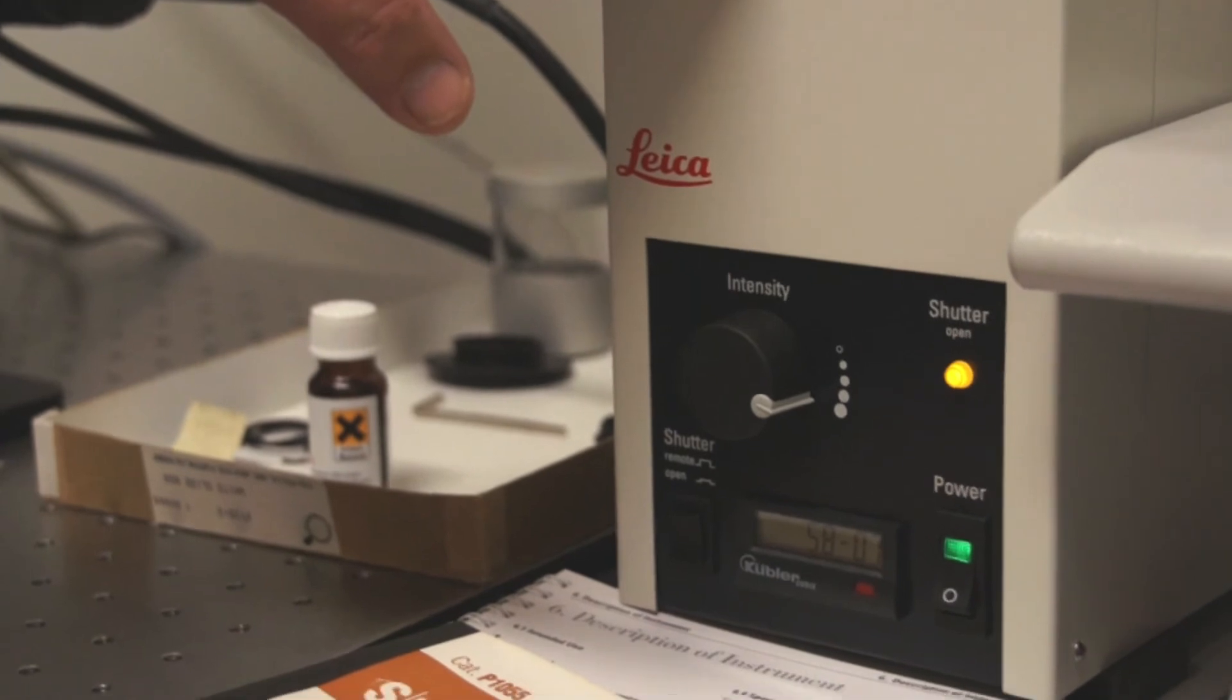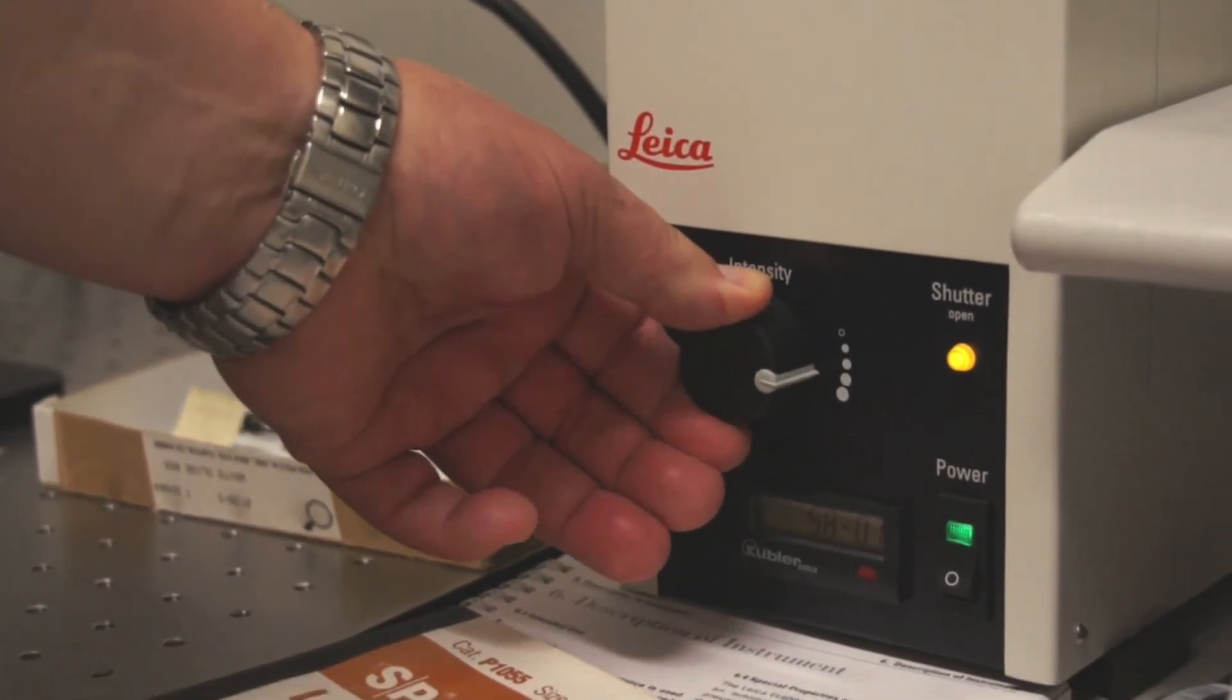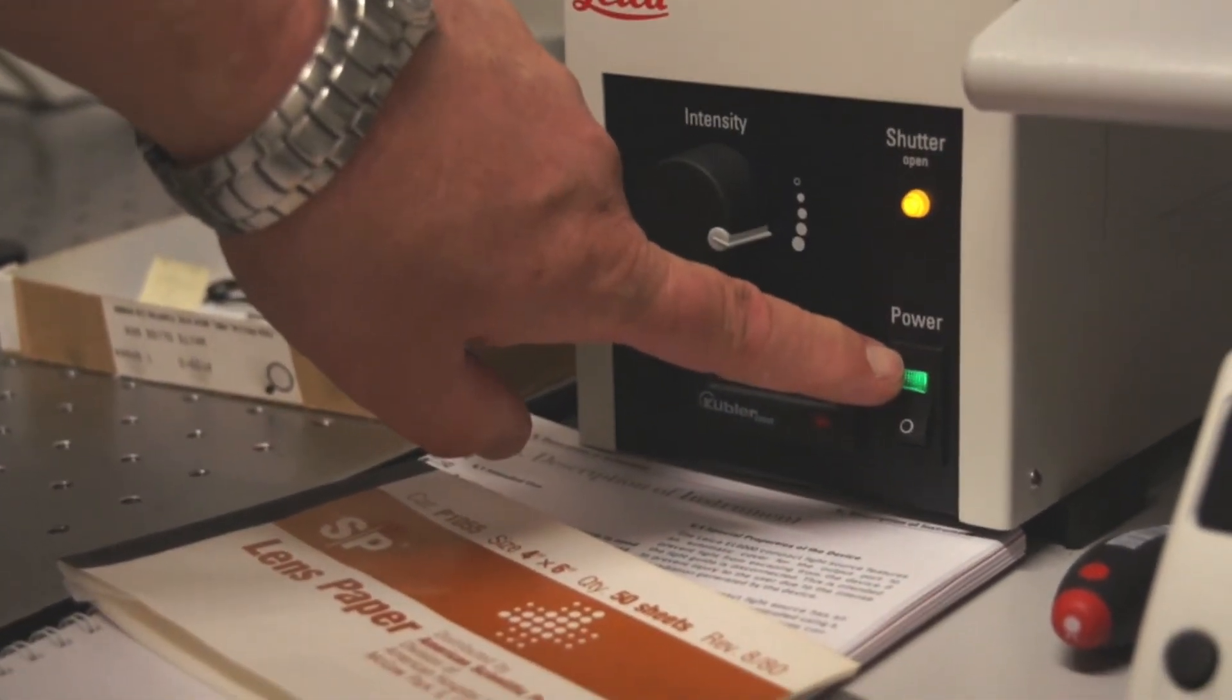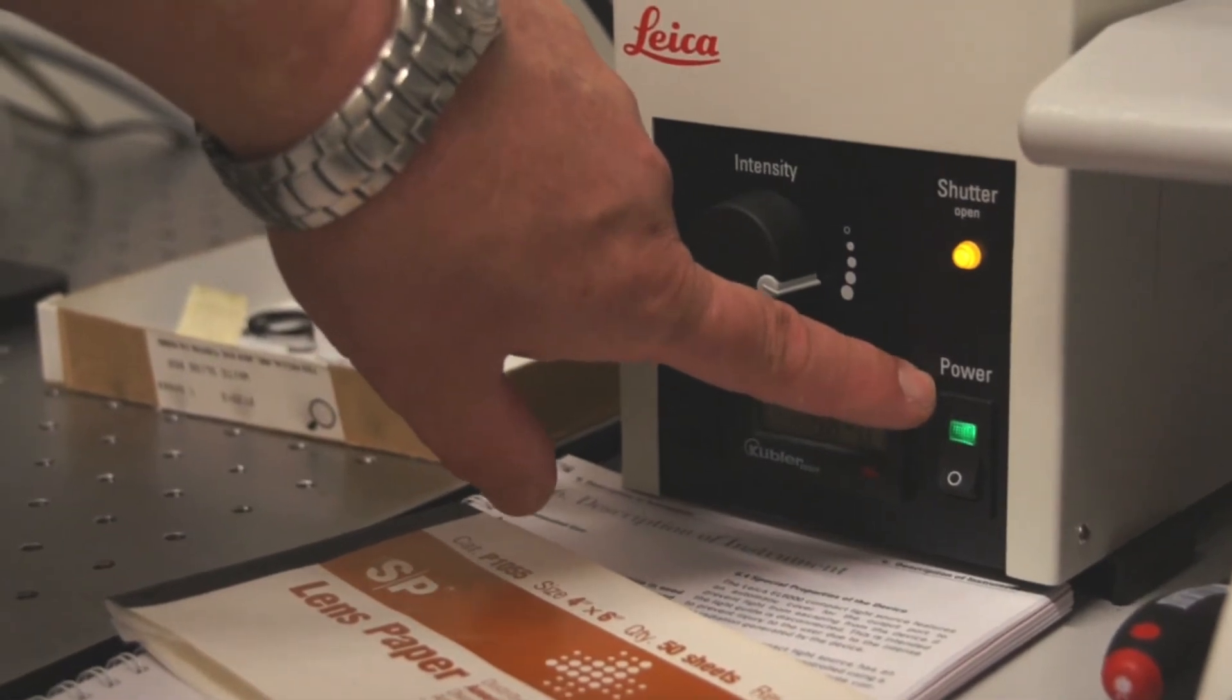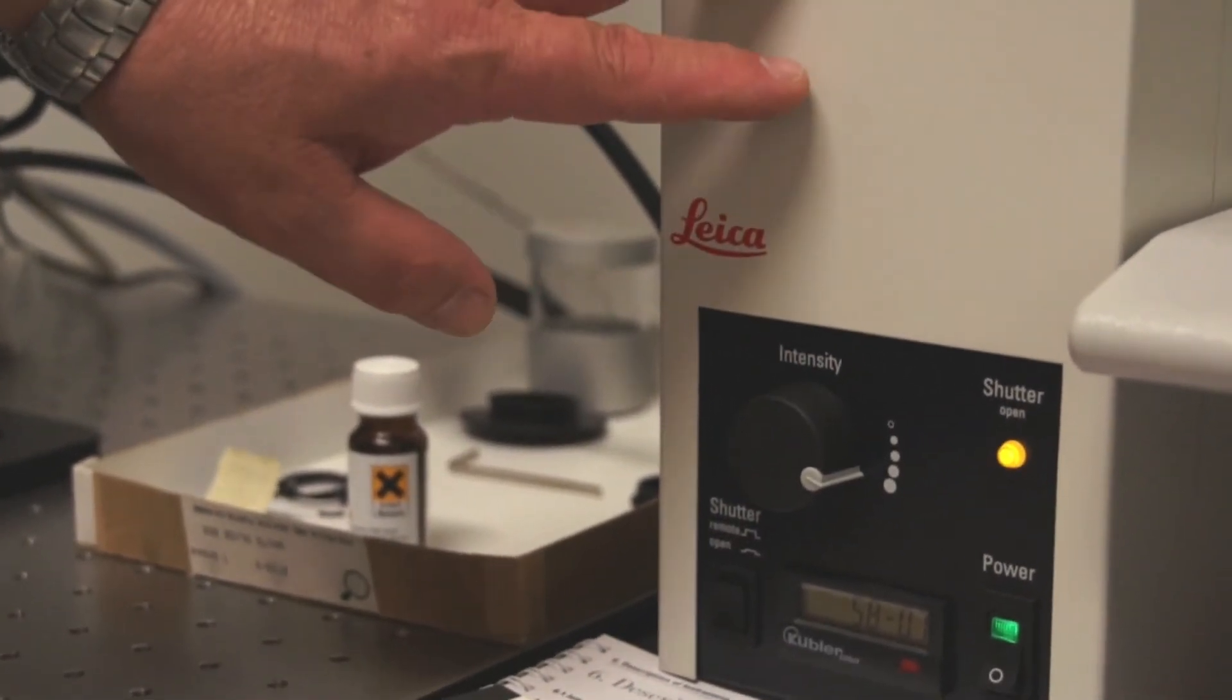This is an HBO mercury bulb such as we discussed before. However, this one's the new variety and therefore you can change the intensity of the illumination and you can also turn it on and off. However, it's best to just turn the power on and leave the lamp house running the whole time that you'll be doing your experiment.